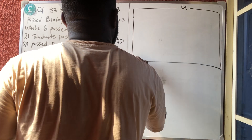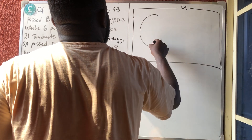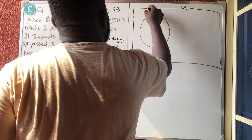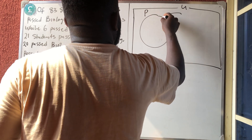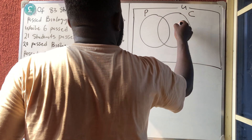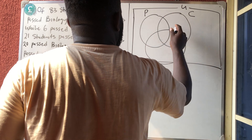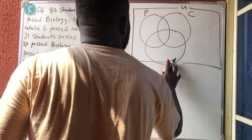So I'm drawing three overlapping circles — this one is Physics, this one is Economics, and this one is Biology.